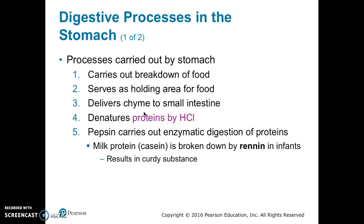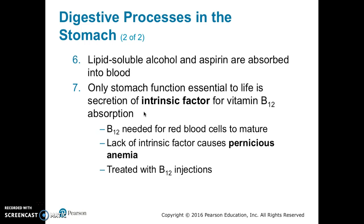The digestive processes the stomach carries out include breakdown of food, serving as a holding area, delivering chyme to the small intestine, denaturing protein via hydrochloric acid and pepsin, and enzymatic digestion of proteins. In infants, rennin breaks down milk. The stomach also absorbs lipid-soluble substances like alcohol and aspirin, and secretes intrinsic factor — the only truly essential stomach function, since vitamin B12 cannot be absorbed without it. B12 is needed for red blood cells to mature; lack of intrinsic factor causes pernicious anemia, which can be treated with B12 injections.